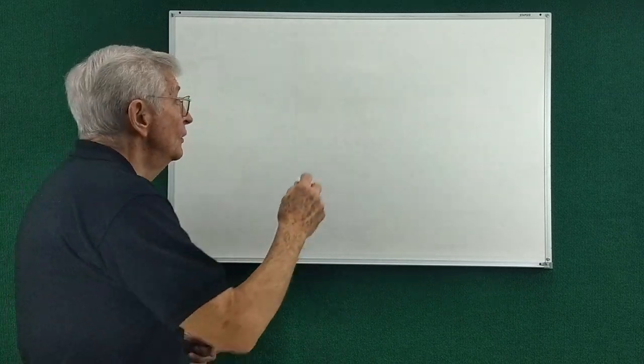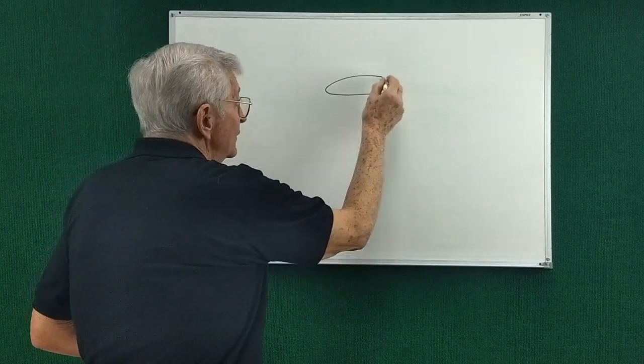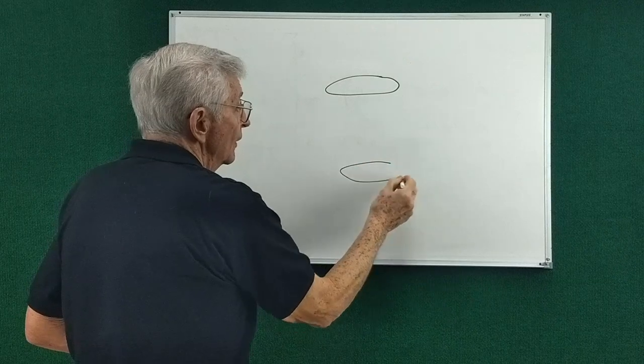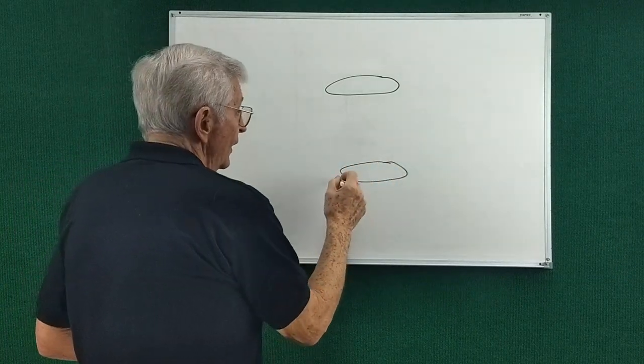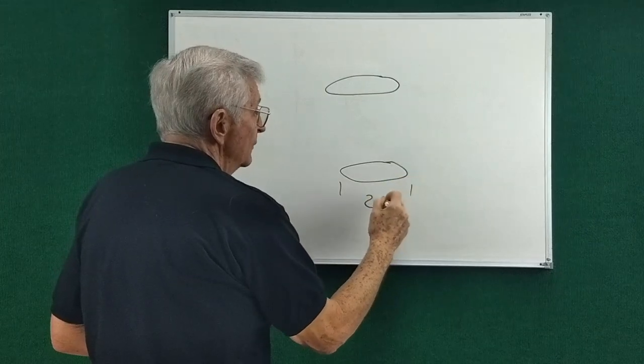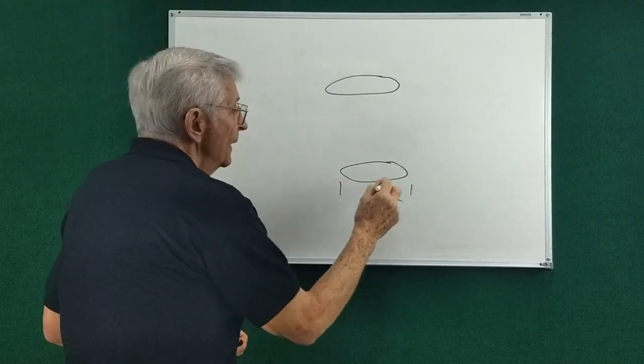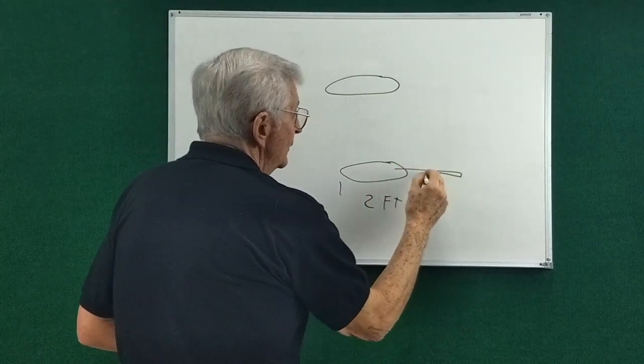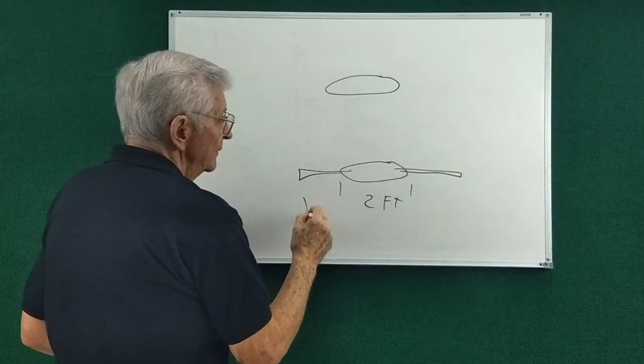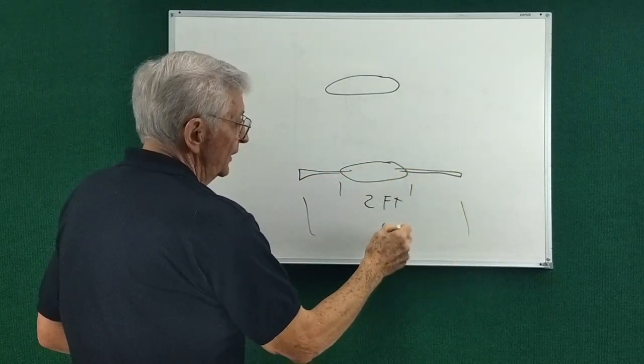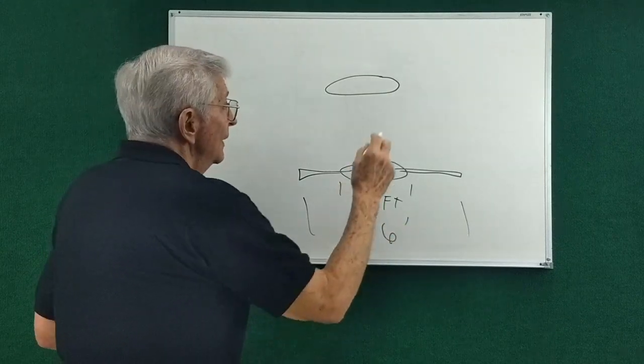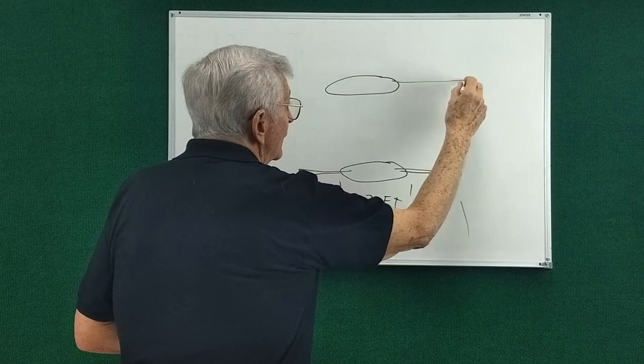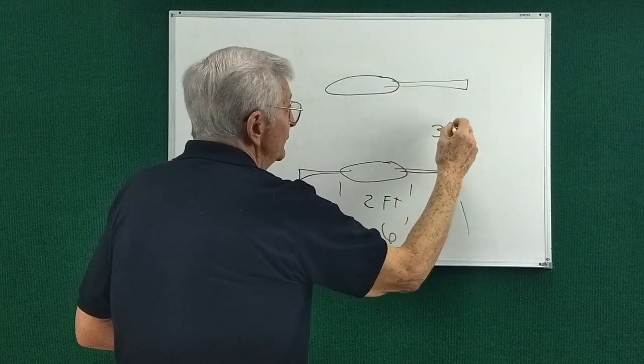We're going to take the wooden disks that we used in the last video. They're two feet in diameter and we're going to put arms on them to make it six feet wide, that's about 1.8 meters, and we'll have them three feet apart.